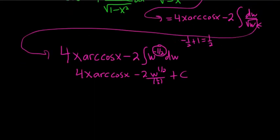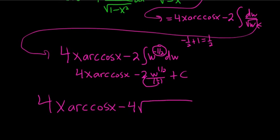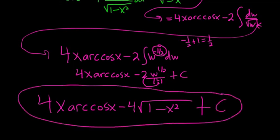Almost done. So we end up with 4x arc cosine x. And then 1 half times 2 is 4, so minus 4 square root. And w was 1 minus x squared, so 1 minus x squared, then we have our plus c. Kind of rushed the video, but a little bit longer problem.